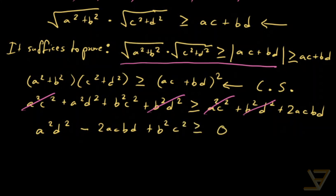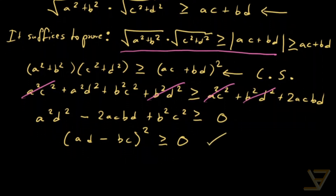Factoring the left side, we get (ad − bc)² ≥ 0, and that is in fact always true. This proves the complex triangle inequality.